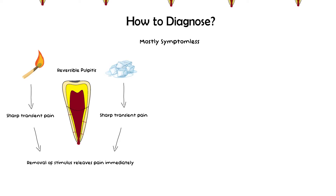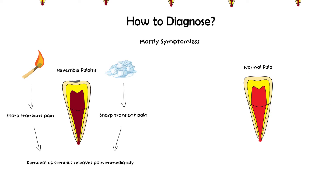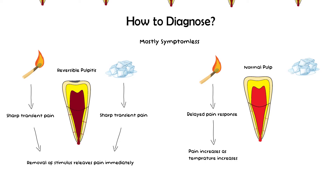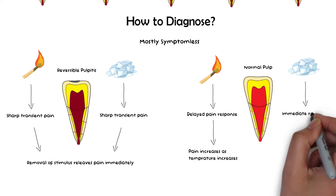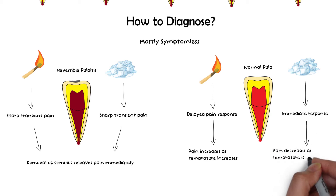Comparing this to a normal pulp: the response to heat on a tooth with a normal pulp is delayed, and once pain occurs, the intensity increases as the temperature increases. When cold stimulus is applied to a normal pulp, it responds immediately but the pain response decreases as the cold stimulus is maintained. Remember, in clinical practice reversible pulpitis can also be symptomless.